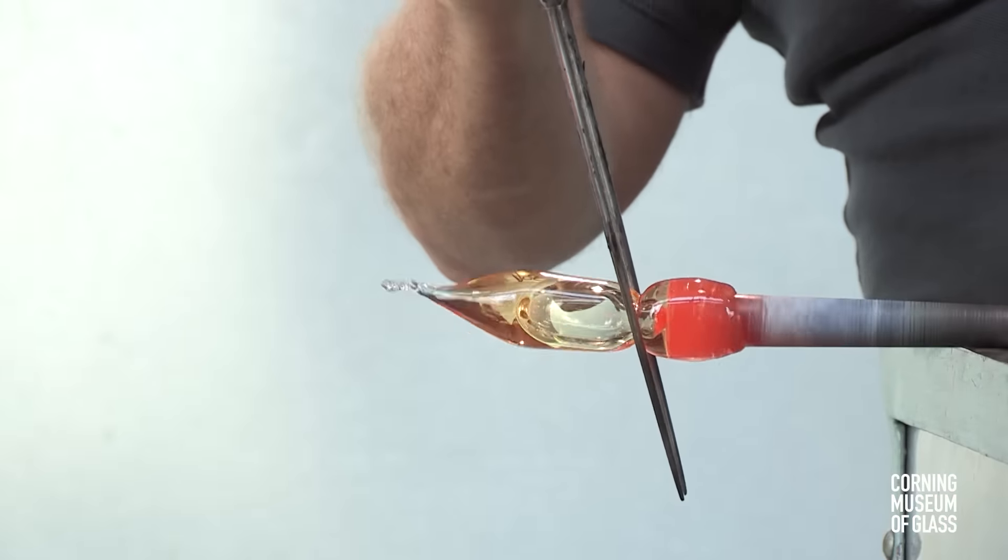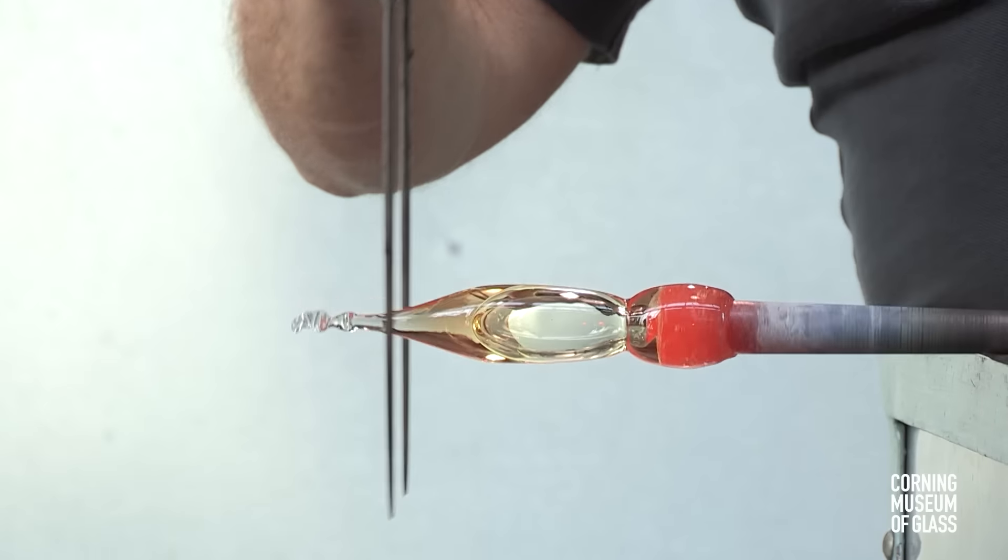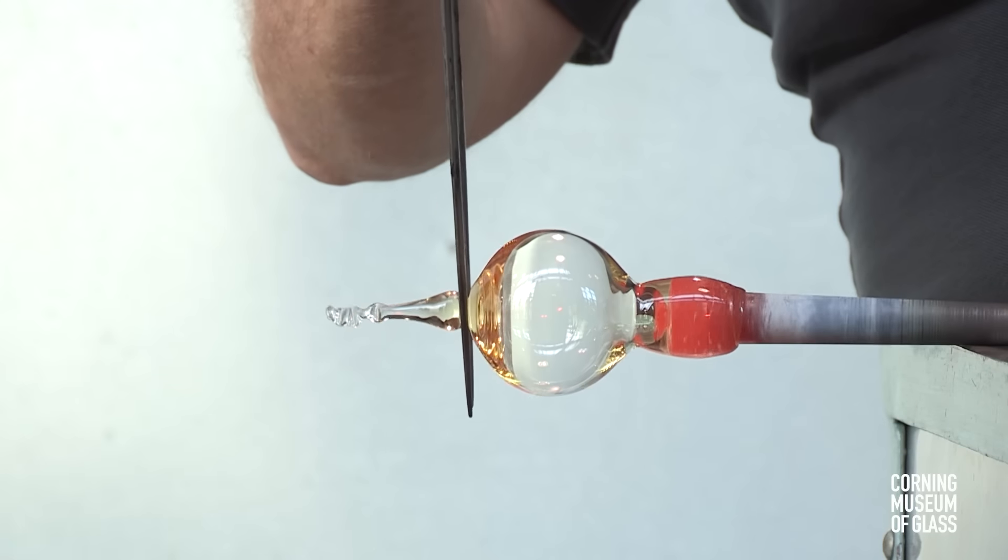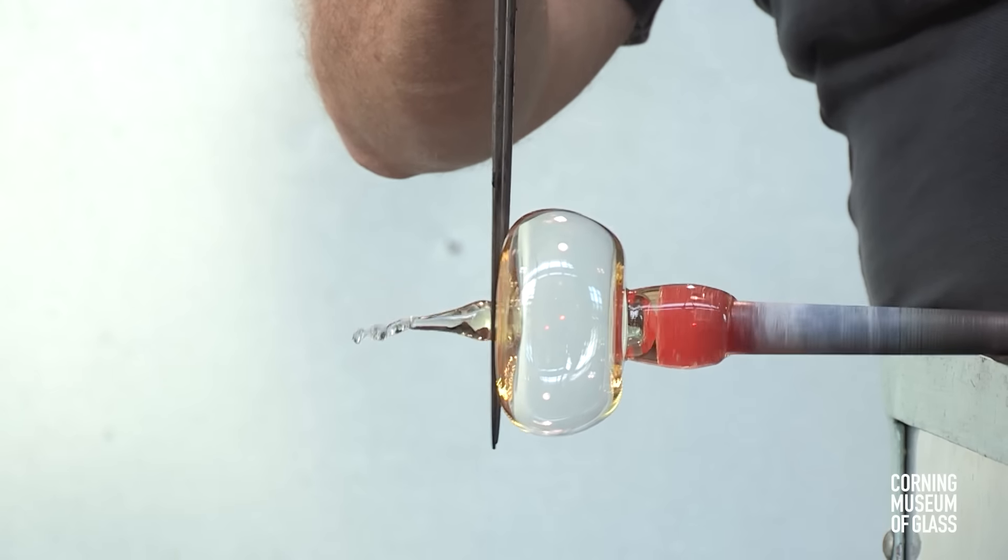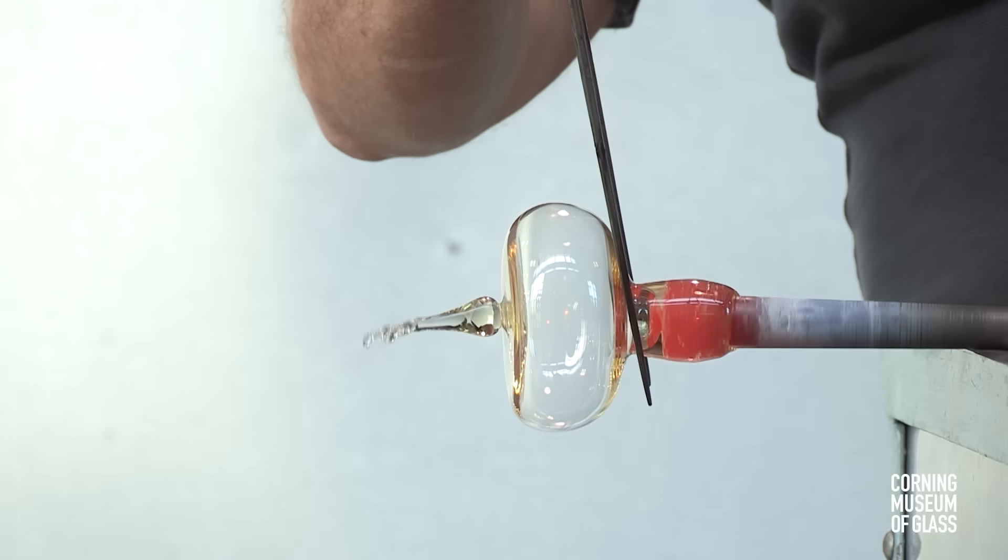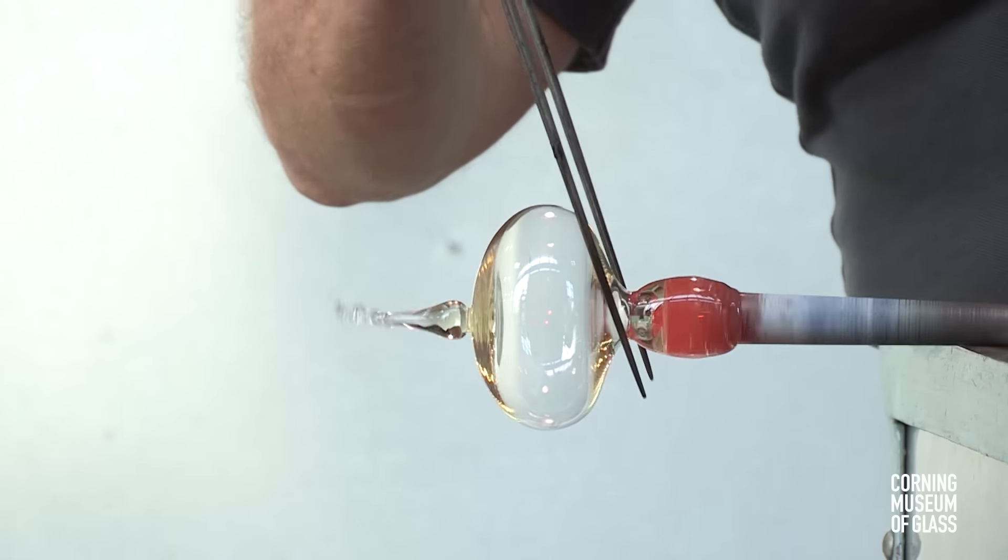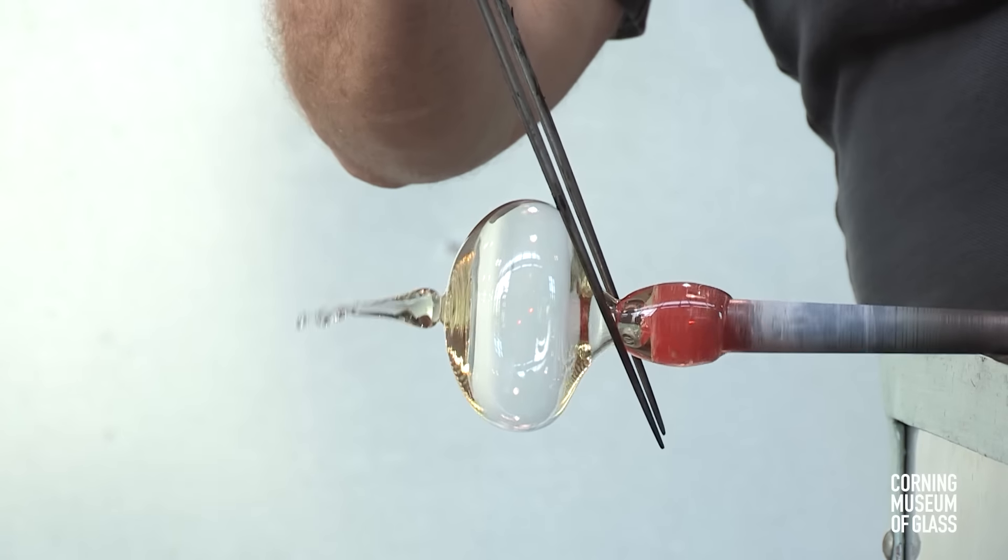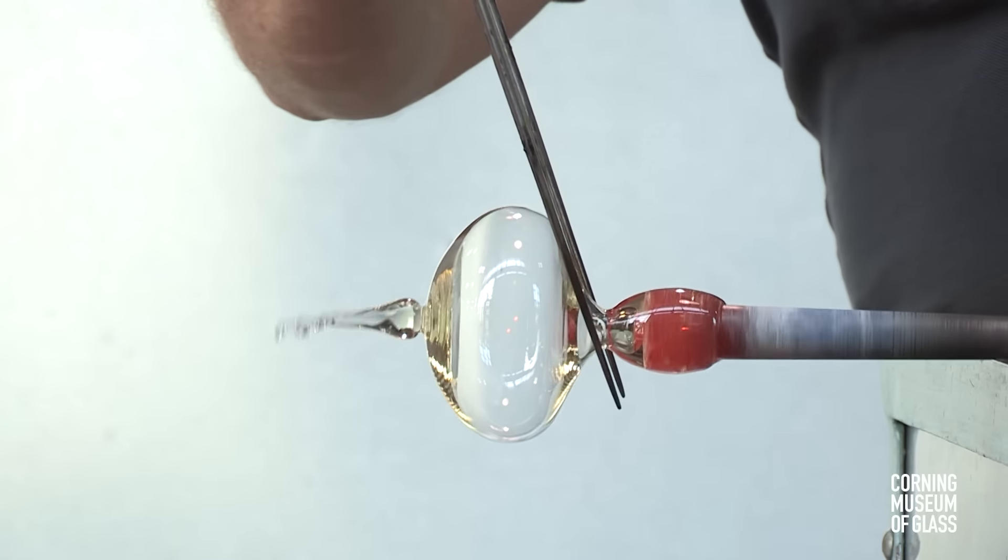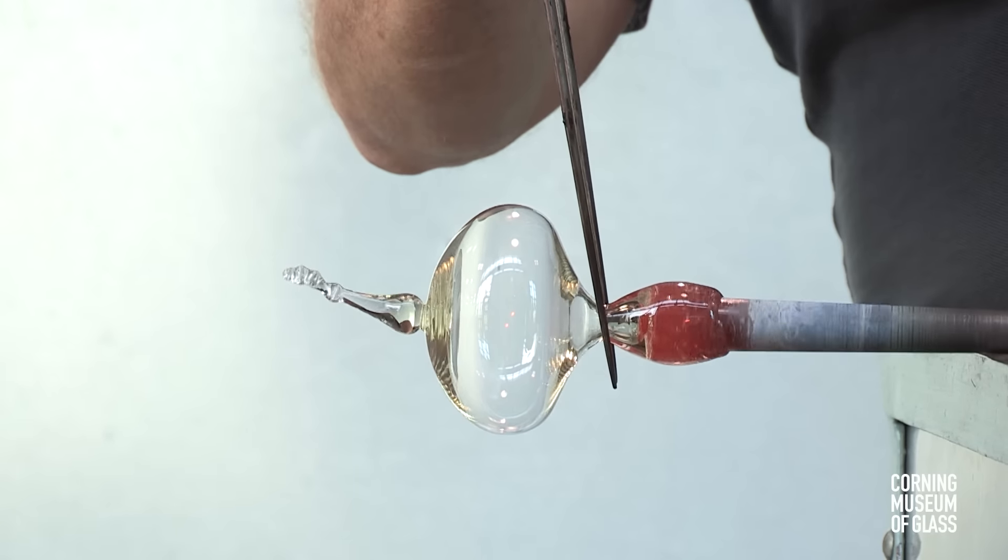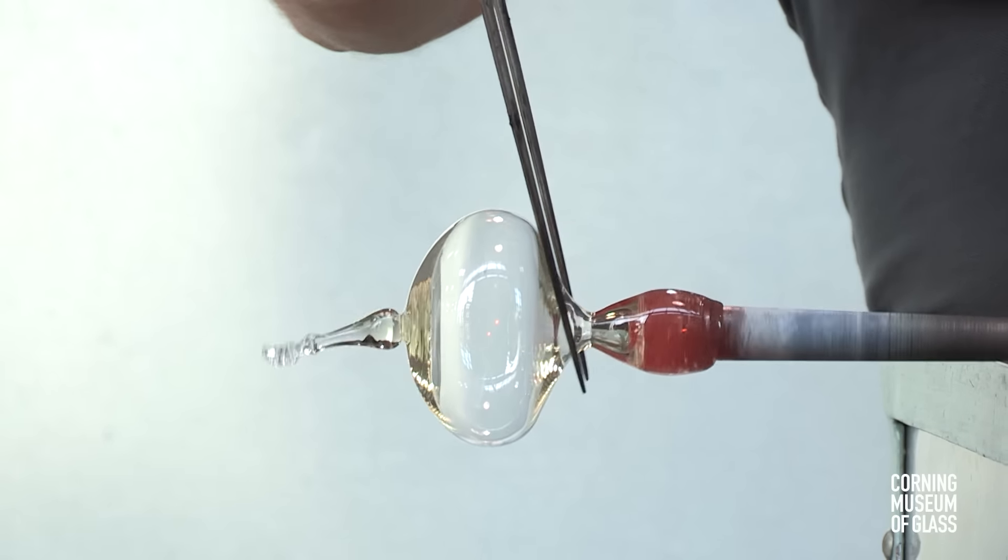The rubber tube allows air to be blown into the pipe while work is done with the two-bladed tool called the metal jacks. A constriction is formed between the bubble and the blowpipe, and later in the process, this will allow the glass to be broken free of the blowpipe.